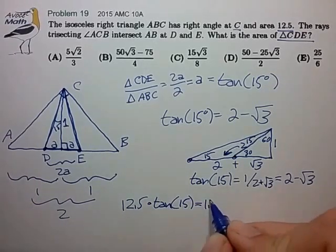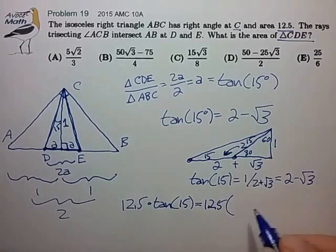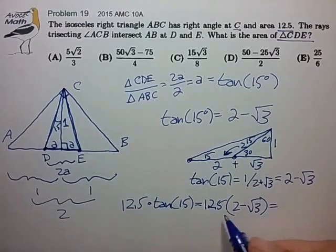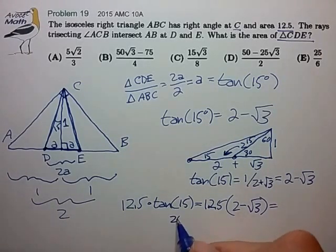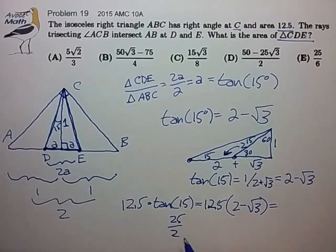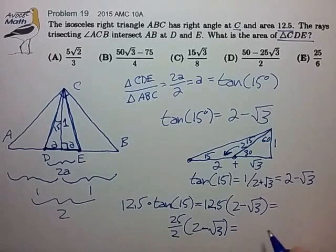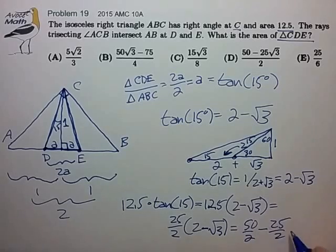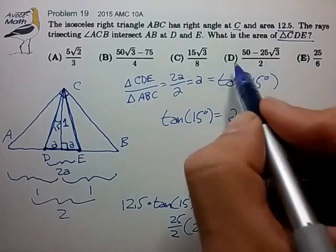And that's 12.5 times 2 minus radical 3, and that is equal to 25 divided by 2 times 2 minus radical 3. And that is choice D.